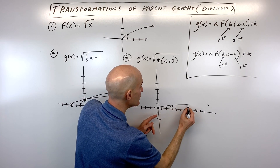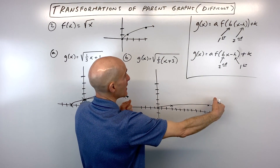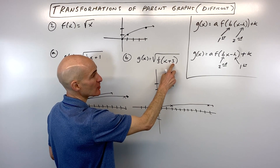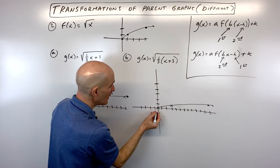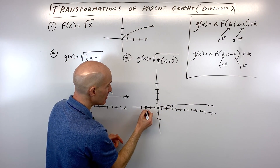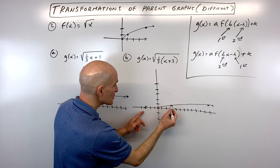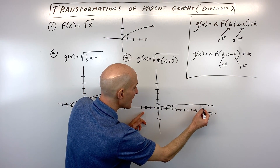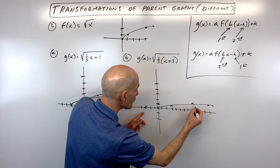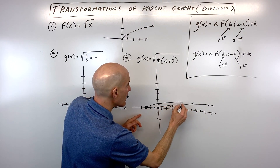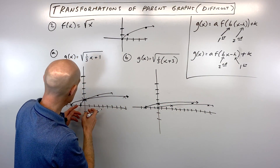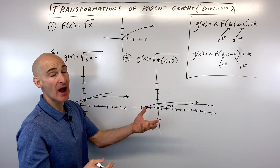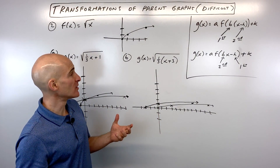Then we follow up with the horizontal shift — the plus 3 shifts left 3 (opposite effect). Each stretched point moves left 3: the point at 0 goes to −3, the one at 3 goes to 0, and the one at 12 goes to 9. We end up with the exact same graph as letter A — just arrived at via a different order of transformations.